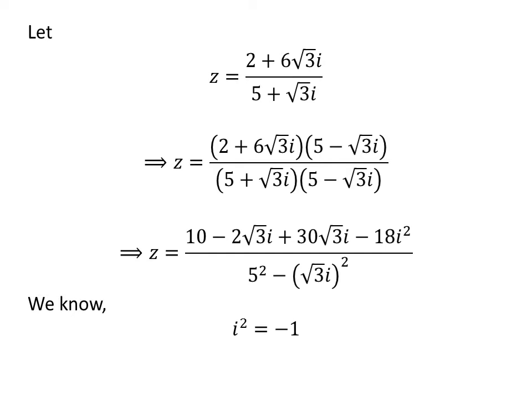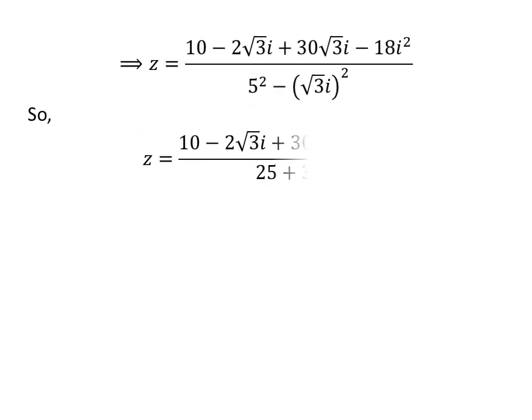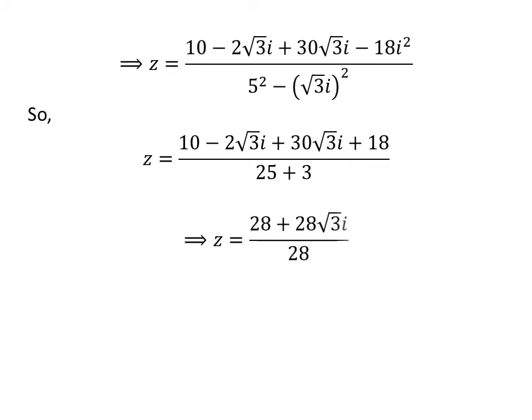We know the square of imaginary unit iota is equal to minus 1. Applying this gives Z equal to 10 minus 2 times square root of 3 times iota plus 30 times square root of 3 times iota plus 18, upon 25 plus 9. Further simplification gives Z equal to 28 plus 28 times square root of 3 times iota upon 28. Cancelling the common factor 28 gives Z equal to 1 plus square root of 3 times iota.